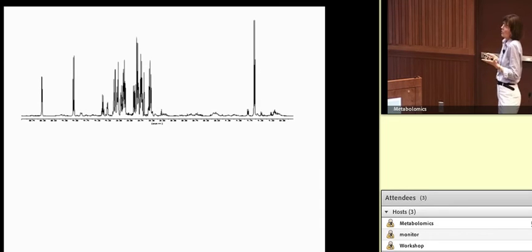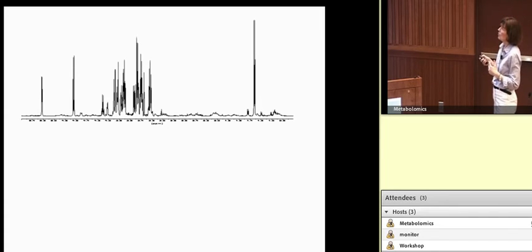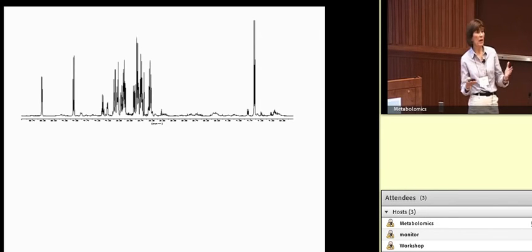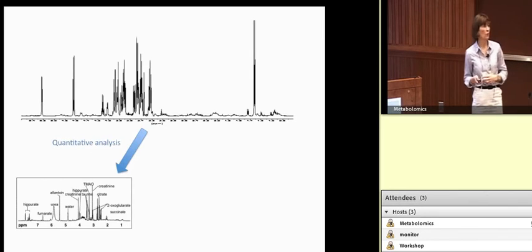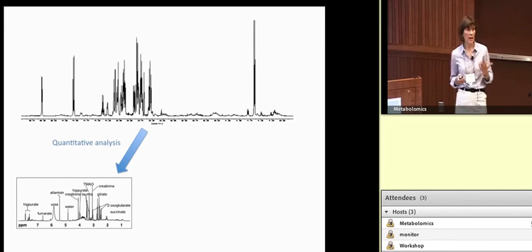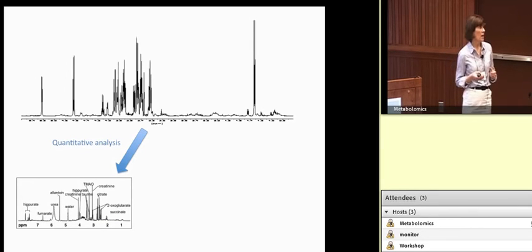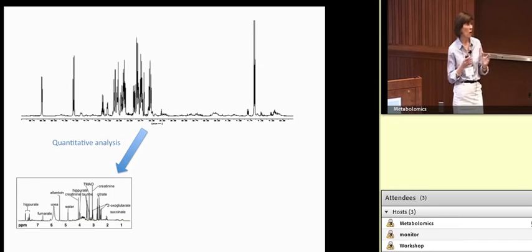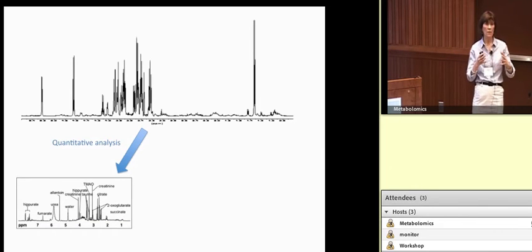This is just a representative spectrum from NMR. The x-axis is chemical shift in parts per million. There's an internal standard. When you generate the spectrum, there are a couple of different ways to approach analysis. You can quantitatively analyze the data using the Konomics software, identifying and quantifying metabolites from your spectra in that software platform.